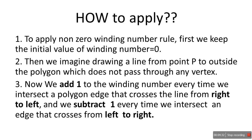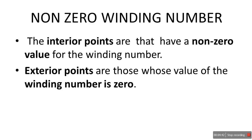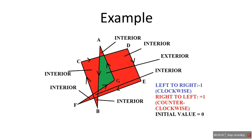To apply the non-zero winding number rule: first, keep the initial value of the winding number as 0. Then draw a line from point P to outside the polygon, which does not pass through any vertex — just like the previous method. Add 1 to the winding number every time an edge crosses the line from right to left, and subtract 1 every time an edge crosses from left to right. Interior points have a non-zero winding number value; exterior points have a winding number of 0.